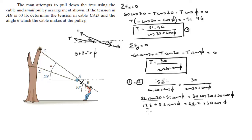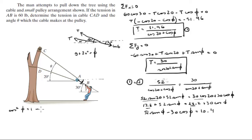Collecting constants: 52 sine of phi minus 30 cosine of phi equals 10.4. From trigonometry, cosine squared phi equals 1 minus sine squared phi, so cosine of phi equals the square root of (1 minus sine squared phi).